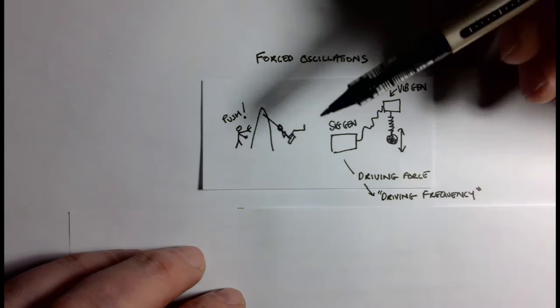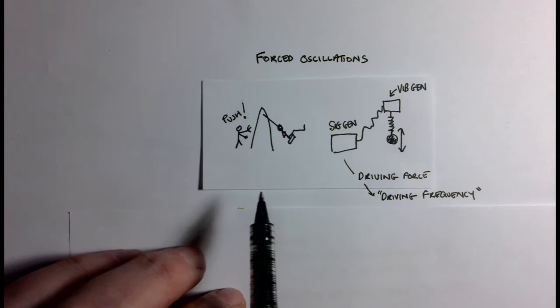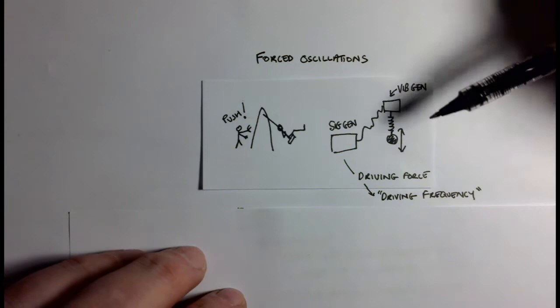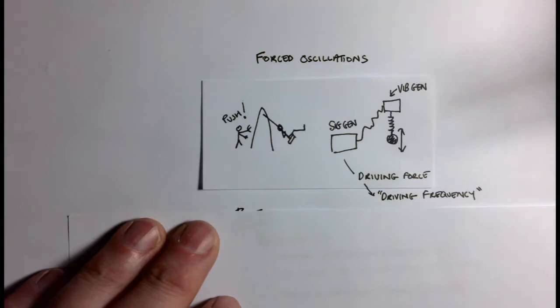What happens is that as we change the frequency on the signal generator, these oscillations don't do much at all until the driving frequency gets close to the natural frequency of this system. When that happens, it effectively just nudges it at the right time, you get the maximum energy transfer, and you get very big amplitude oscillations.